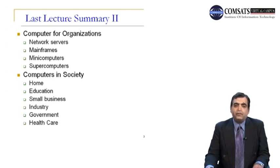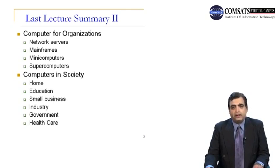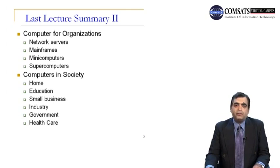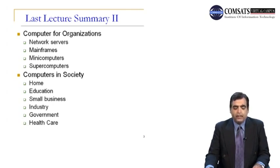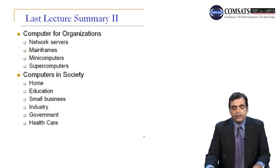Then we discussed computers for organizations. Some types of computers such as network servers, mainframes, miniframes, and supercomputers are commonly used by organizations where more than one person uses them, supporting the computing needs of many users. A network server is a powerful personal computer used as the central computer in an organization's network. Mainframes are powerful special-purpose computers that can support the needs of hundreds or thousands of users. The minicomputer supports dozens or hundreds of users at a time, and supercomputers are the largest and most powerful computers.